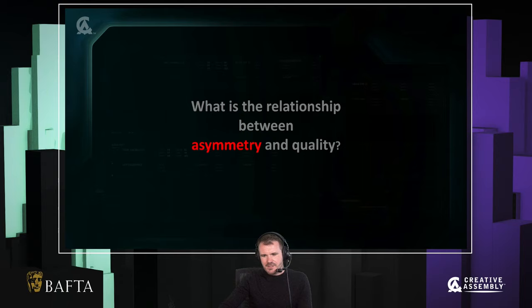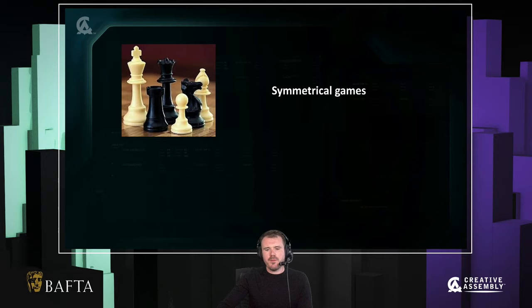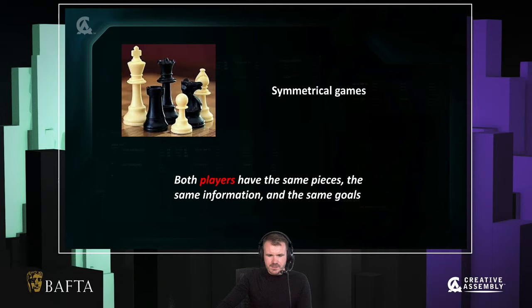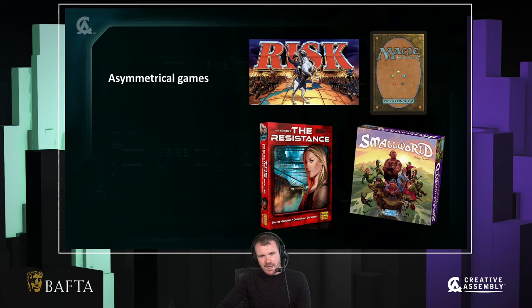Coming back to that question I asked at the beginning, I'm going to start by defining some terms. What is an asymmetrical game? Let's start by talking about what a symmetrical game is. The classic example of a symmetrical game is chess. In chess, both players have the same pieces, the same information, and the same goals. The fact that this definition is player-centric is very important, and I'll come back to why that is later.